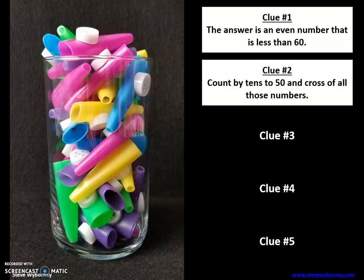Count by tens to 50 and cross off all those numbers. Count by tens to 50 and cross off all those numbers that you said. Make a change if none of those are your answer. Okay, so anything you said counting by tens to 50 cannot be the answer. Alright.